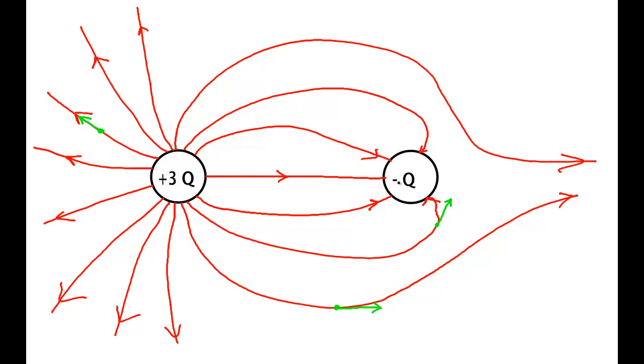They either end on the negative charge or they go in from infinity. In this case because there's more positive Q than negative Q, the lines go out to infinity. If there was more negative Q than positive Q, the lines would be coming in from infinity. But I would have drawn it the same way. It's not perfect but it gives us a good visualization of what the electric field looks like here.